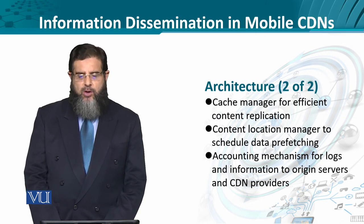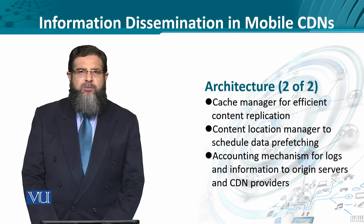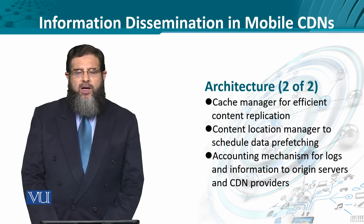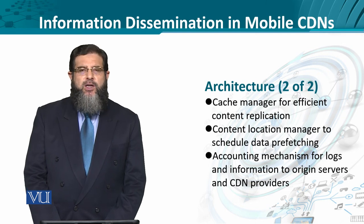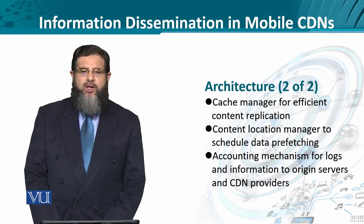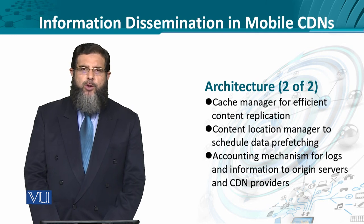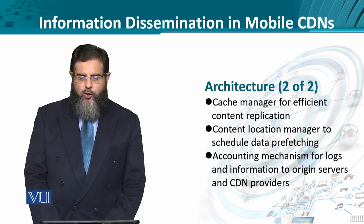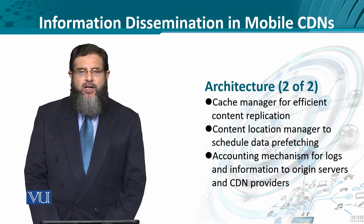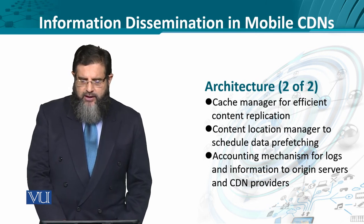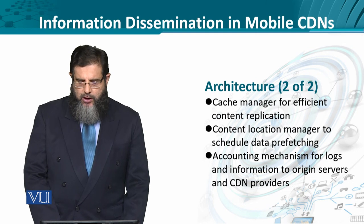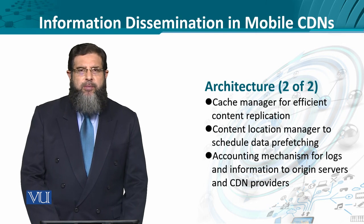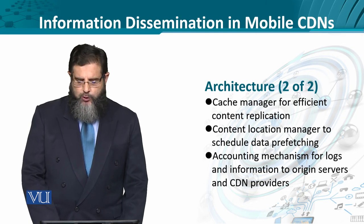Once the cache managers have cached the content, the content location manager has to facilitate and schedule data provisioning to users which are in close proximity. The data could be pulled or pushed, either way. Last but not the least, an accounting mechanism for collecting logs and information, so that the strategy for replication, caching, surrogate deployment, and surrogate access mechanisms could be improved.